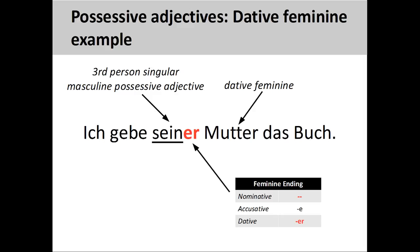Let's now take a look at how to apply these rules. I'll use an example that has 'ein' as part of the root, so you can see the similarity between possessive adjectives and indefinite articles. In the sentence 'ich gebe seiner Mutter das Buch' — I give the book to his mother — the adjective ending indicates that the following feminine noun, 'Mutter', is both singular and in the dative case. The root of the possessive adjective indicates the relationship between the mother and the male person, her son.